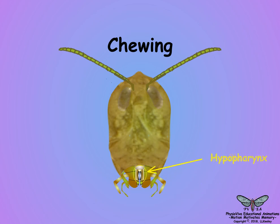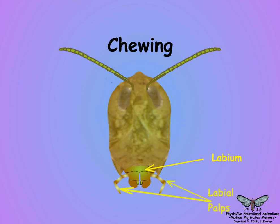Between the maxillae and above the labium is the hypopharynx, a tongue-like structure to facilitate directing food into the pharynx and swallowing. The labium is a plate-like structure with palps on each side that covers the mouth as a lower lip.